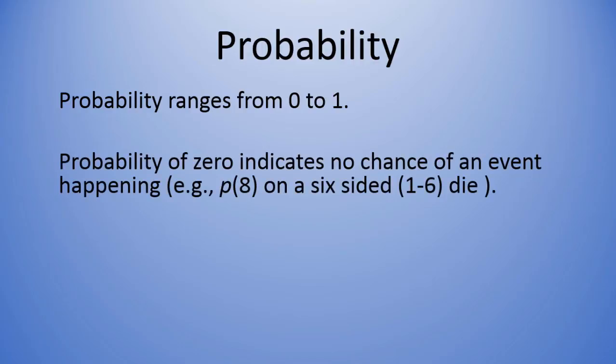The probability of zero indicates no chance of an event happening, something that cannot happen, such as, for example, the probability of rolling an eight on a six-sided die, where the numbers on the die are one through six. That's impossible. So we would say the probability of rolling an eight is zero in this case.